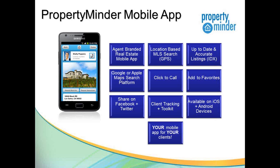Client tracking is available in the toolkit. Whenever a consumer is using your mobile application, you get to see exactly what property listings they're looking at, what searches they're running, how often they looked at every property, and what time they're looking at properties - the same tracking you've got on your website for web visitors. In your toolkit, it will tell you how they're interacting with your data: are they looking at it from a website or from a mobile app? It's available on all iOS, Apple, and Android devices, and it's branded to you.